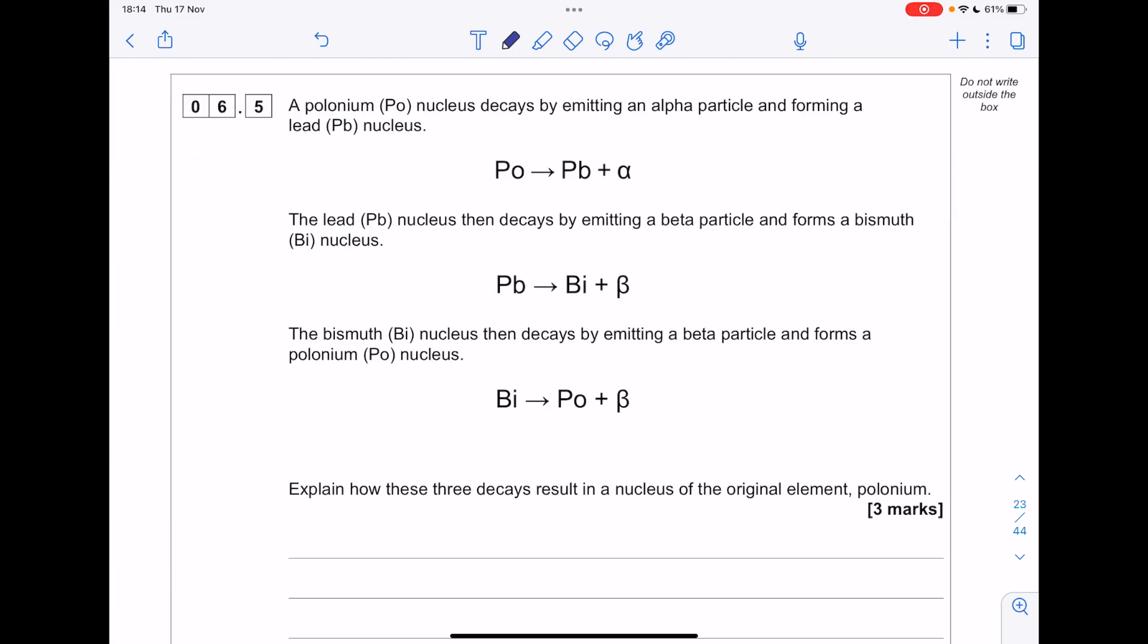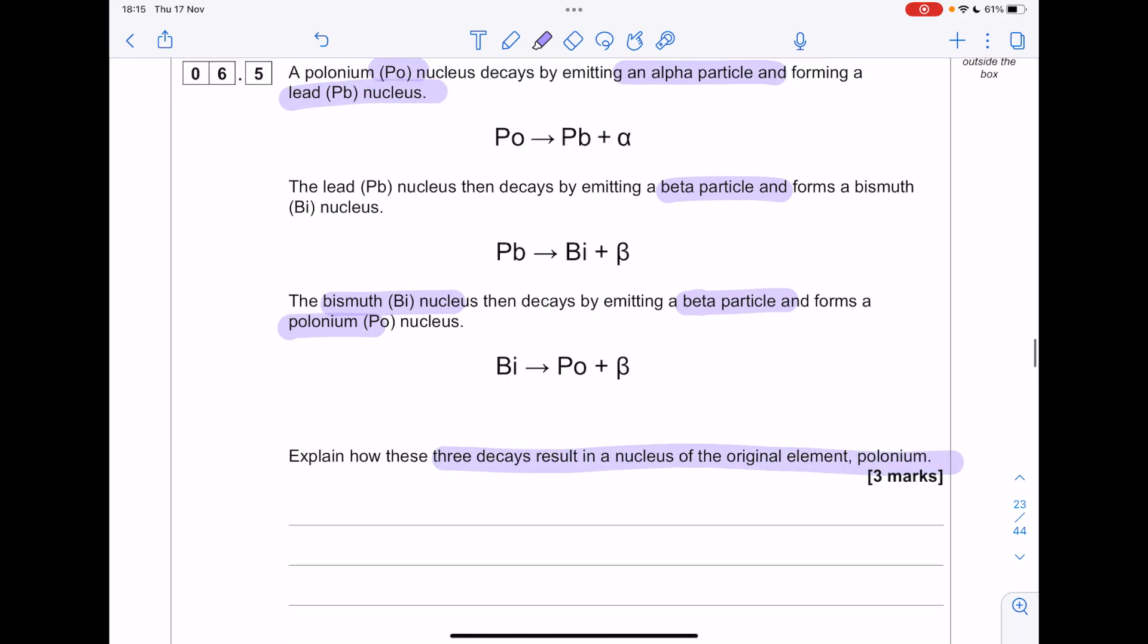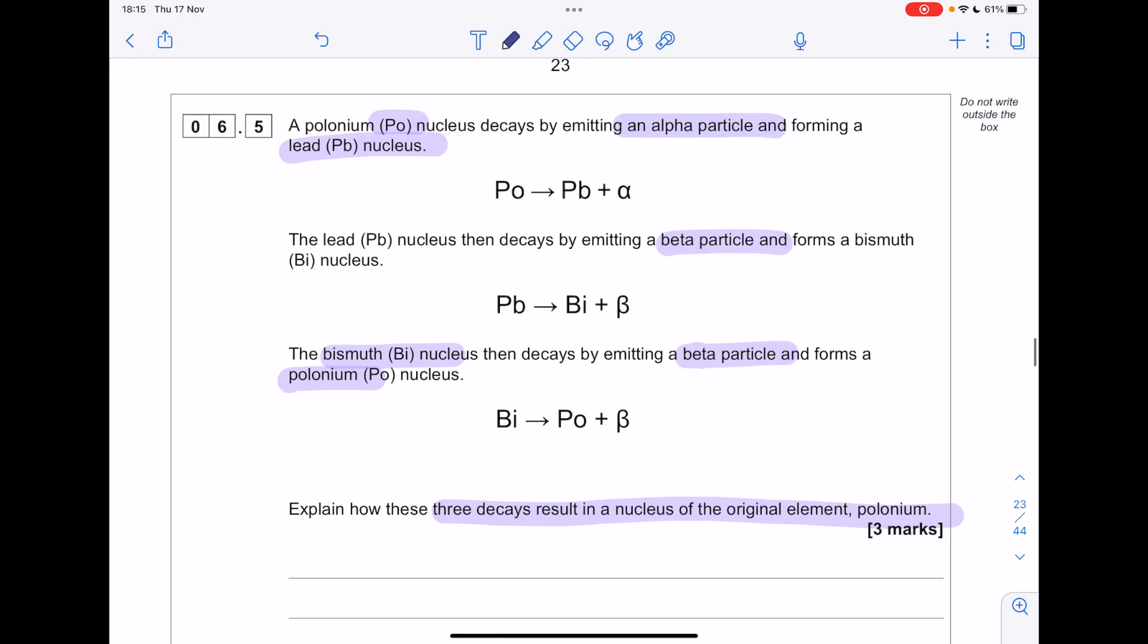A polonium nucleus decays by emitting an alpha particle and forming lead. The lead nucleus decays by emitting a beta particle to form bismuth. The bismuth decays by emitting a beta particle and forms polonium. Explain how these three decays result in the nucleus of the original element polonium. We just need to say what's happening. This decay would mean that two protons and two neutrons are lost. Whereas with a beta particle, remember that a neutron turns into a proton.